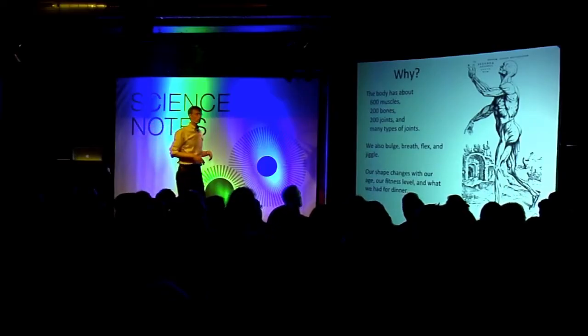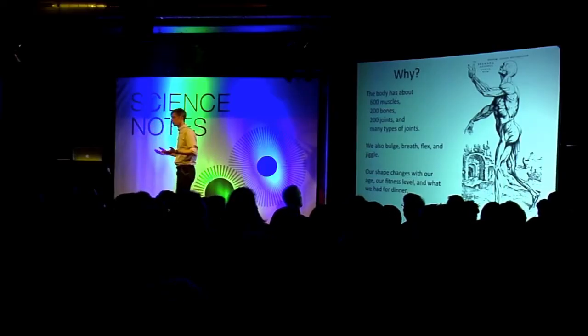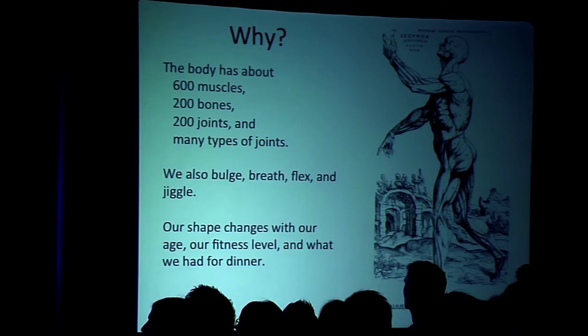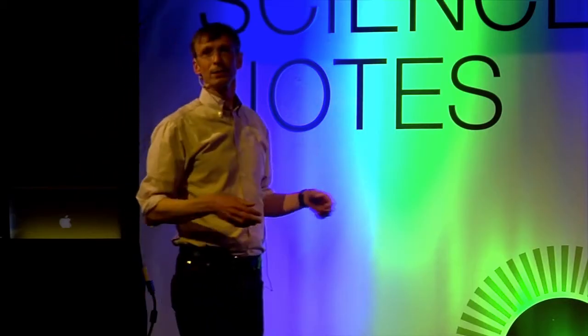And I think the reason for that is the human body is actually pretty complex. We have about 600 muscles, a couple hundred bones, a couple hundred joints, and a wide variety of different kinds of joints. We're also very soft and jiggly. And so, we all jiggle. And our shape changes throughout the day even, depending on what you had for dinner tonight, your shape may be a little bit different.